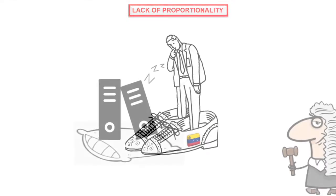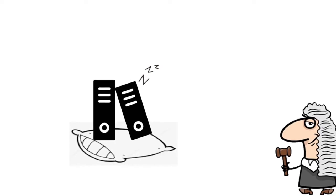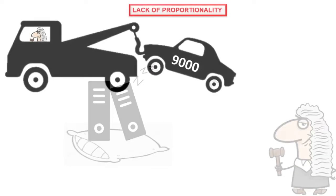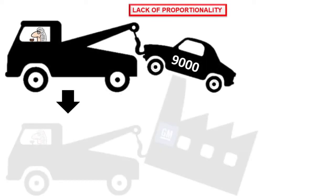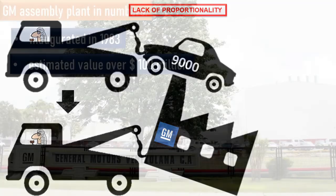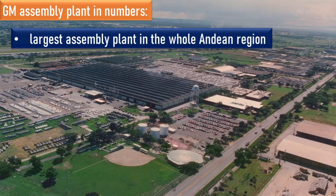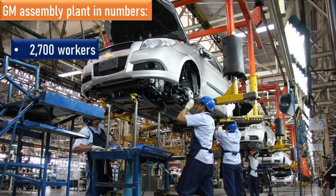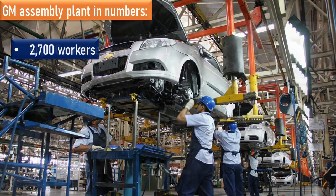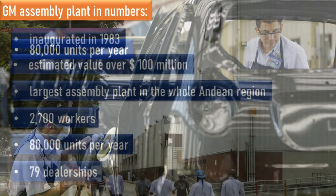By repeatedly ordering the delivery of over 9,000 vehicles on predatory terms, only to then proceed to seize GM's factory in Valencia upon GM's default on the delivery, Venezuelan courts committed over a period of time a creeping expropriation of GM Spain's investment in Venezuela. The lack of proportionality of the Venezuelan courts' measures in addressing a mundane dealership-manufacturer court case is a further indication of their expropriatory character. It appears that the long-dormant court case was used as a pretext by the Venezuelan state to take over the whole business of GM Venezuela — whose plant was estimated to be worth over $100 million, being not only the largest assembly plant in Venezuela but in the whole Andean region of South America — employing 2,700 workers with a production capacity of 80,000 units per year and counting on a network of 79 dealerships.